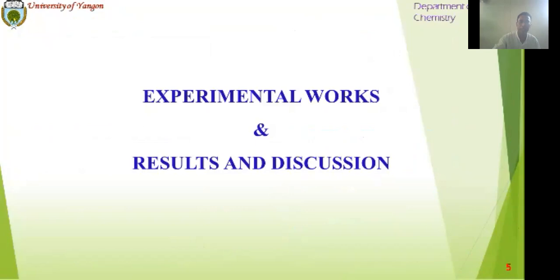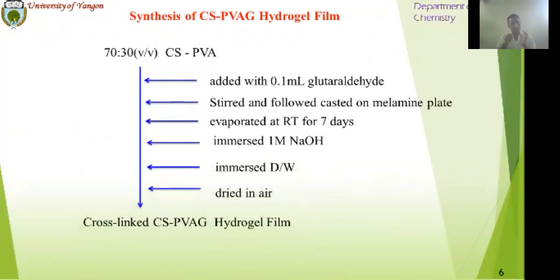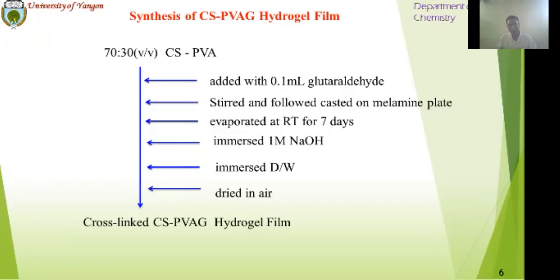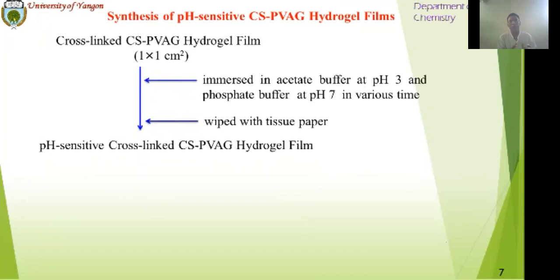Let me continue with experiment and discussion. For synthesis of chitosan polyphenate alcohol hydrogel, 1% chitosan and 20% PVA at a 70:30 volume-by-volume ratio was added into a 250 mL beaker and stirred to form a homogeneous solution, followed by 0.1 milliliter of crosslinker. It was cast on a membrane, then dried at low temperature. The dried film was immersed in 1 molarity glutaraldehyde solution, then rinsed in distilled water and dried in air. The crosslinked C-PVA-G hydrogel was obtained.